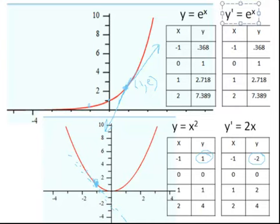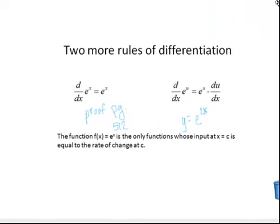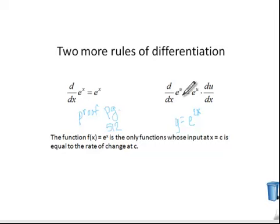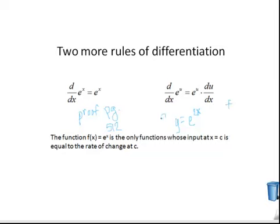So y equals e to the x is a strange function. There is an interesting proof on page 512 that will serve as an extra credit problem — please look it over. It brings us back to the limit approach for finding derivatives. The other thing I want you to see is that if you have an exponential base e to some other function, you're going to have to use the chain rule on it. When we had to derive composition functions, we used the chain rule.